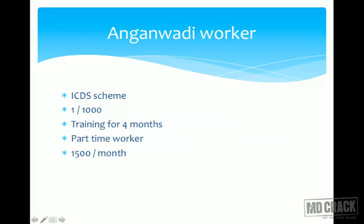The Local Dai must conduct at least two deliveries under the supervision of the health worker female. The target for the Dai is one per village — a village being defined as approximately 1000 population — so one Dai per 1000 population. The Anganwadi worker is under the ICDS scheme, with a target of one per 1000 population. Training of four months is given; they are part-time workers with a maximum salary of 1500 rupees per month.